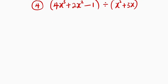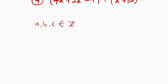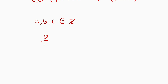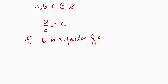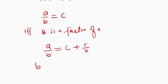Division of integers. Suppose you have a, b, and c all belonging to the set of integers. a divided by b is only equal to c if and only if b is a factor of a. This implies that b can divide a exactly c times without remainder. But what if b is not a factor of a? You're going to obtain something like a divided by b equal to c plus a certain remainder out of the divisor, which is b. In this case, b is not a factor of a.